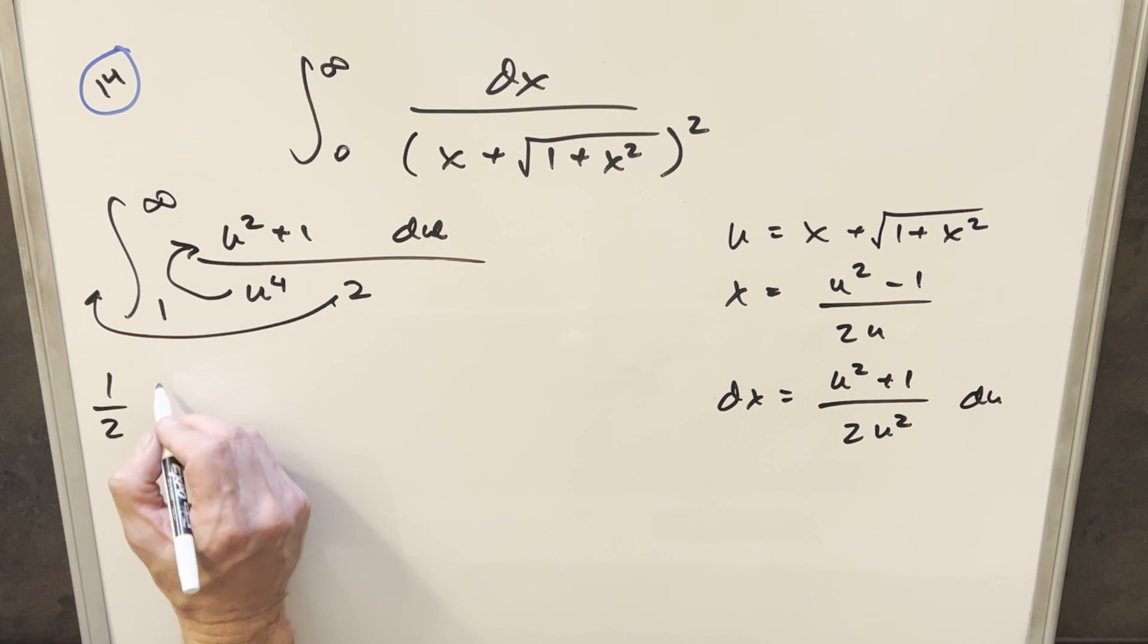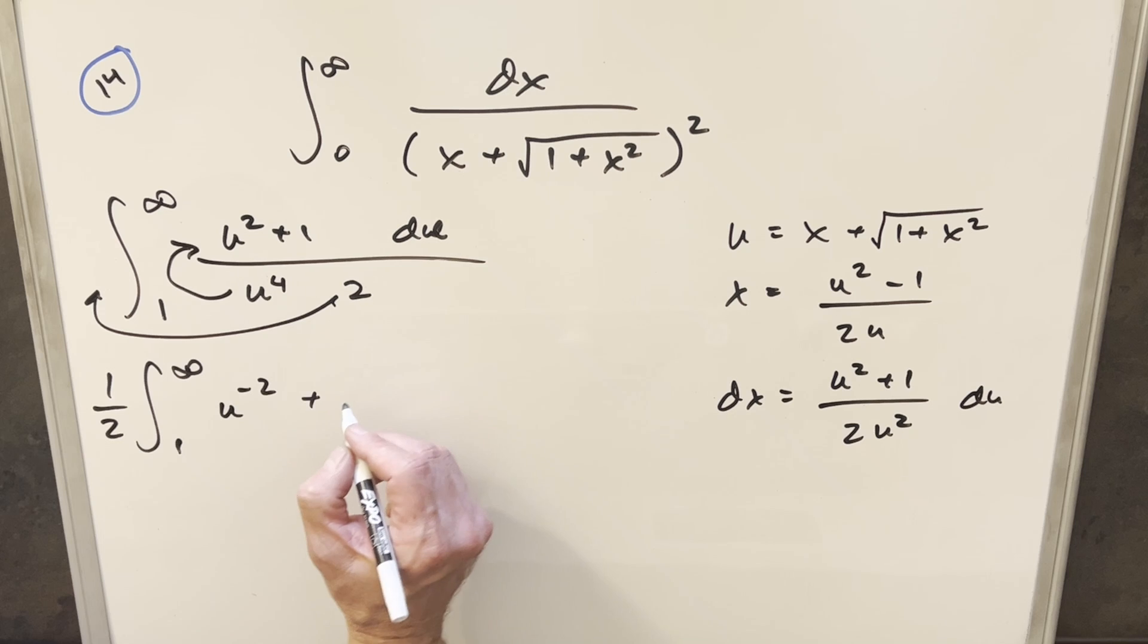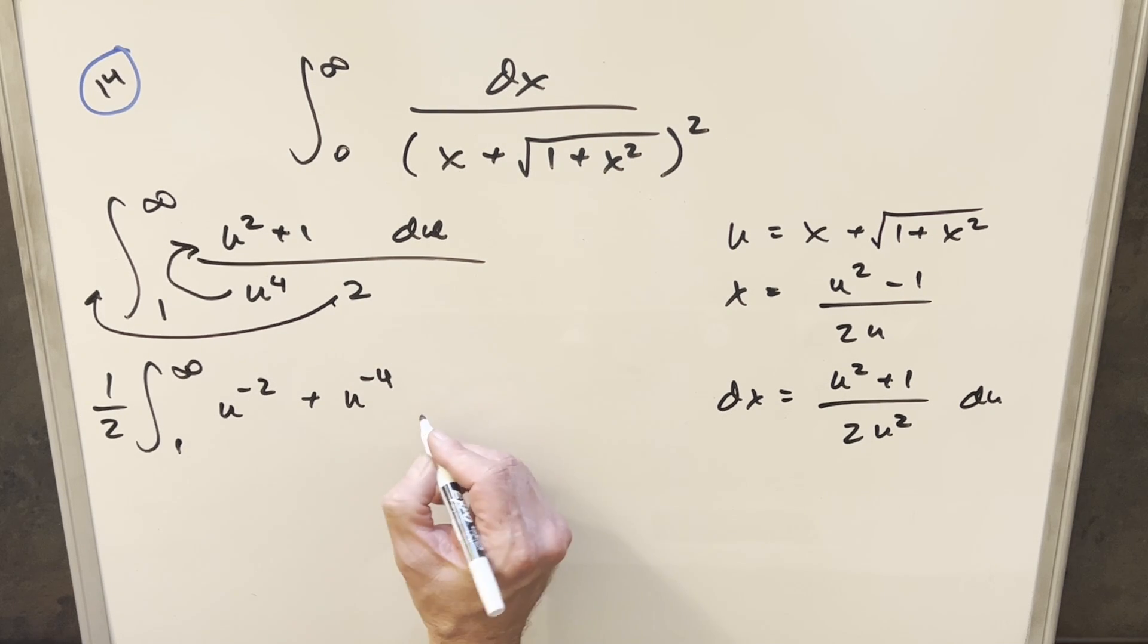So what's going to happen is when we rewrite, this is going to become 1 half, 1 to infinity. u to the 4th into u squared is going to give me u minus 2. And u to the 4 into a 1 is going to give me a plus u minus 4 du.